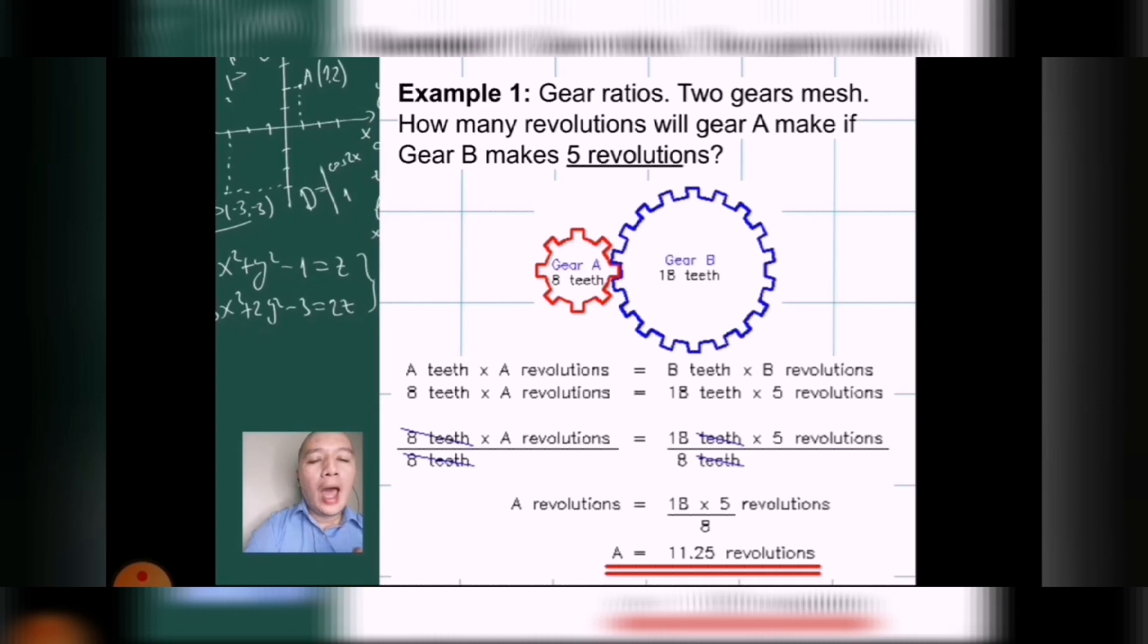So, when we write this down, we have a simple guide that we can follow. For gear A, gear B teeth is multiplied by A revolutions, and then gear B teeth is multiplied by B's revolutions. So, when we put in the numbers, 8 teeth multiplied by A revolutions, because we are still trying to find out how many revolutions will it take for gear A. And then, 18 teeth for gear B multiplied by 5 revolutions is already given.